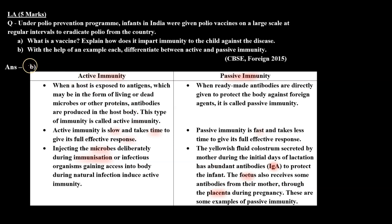Formal answer for Part B — Active immunity: When a host is exposed to antigens, which may be in the form of living or dead microbes or other proteins, antibodies are produced in the host body. This type of immunity is called active immunity.